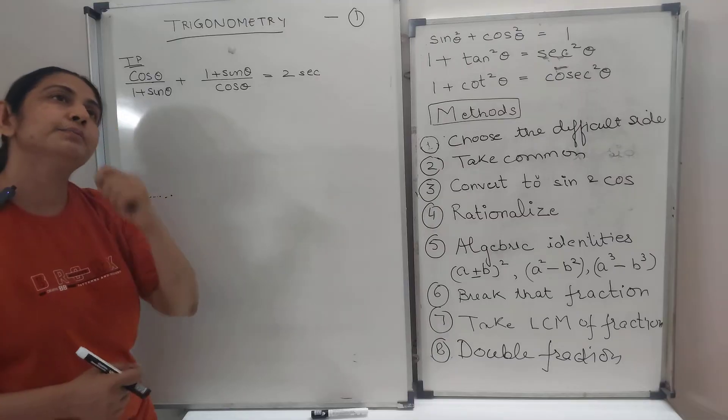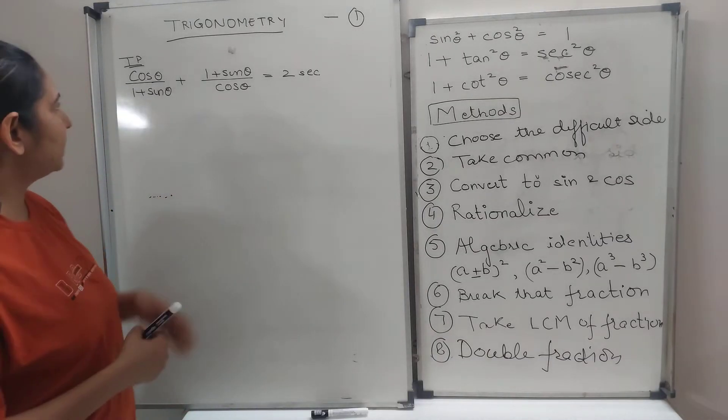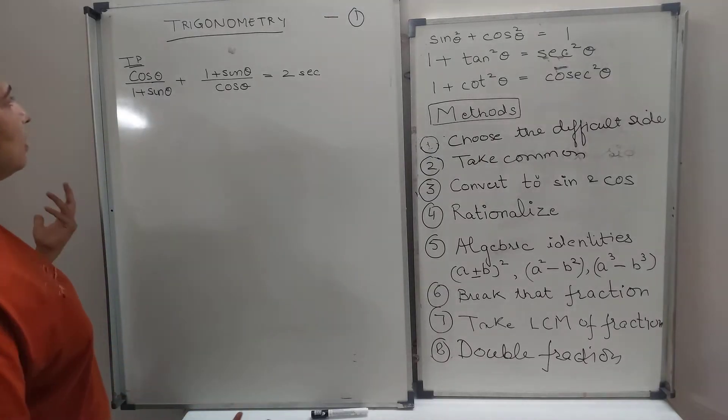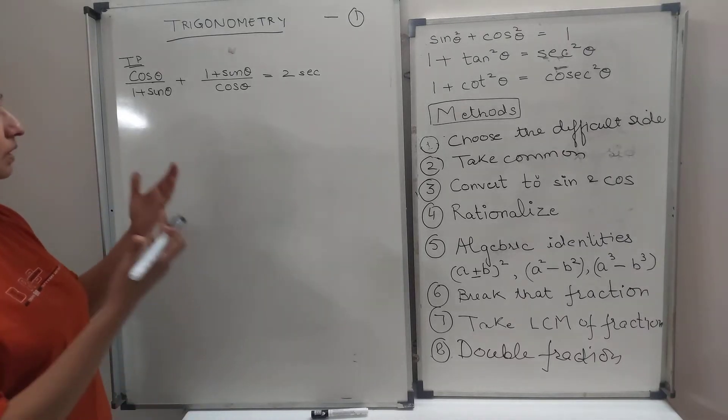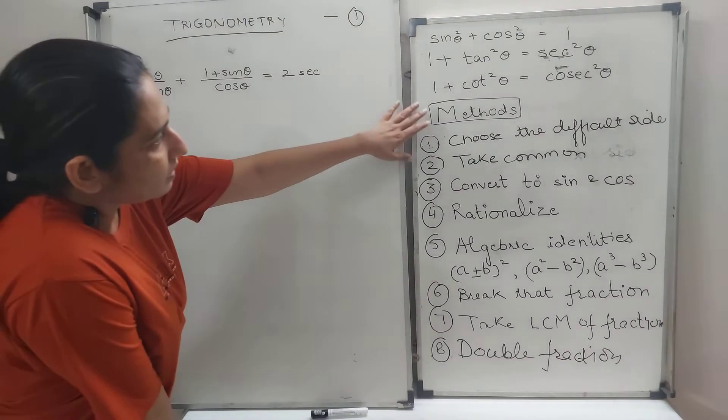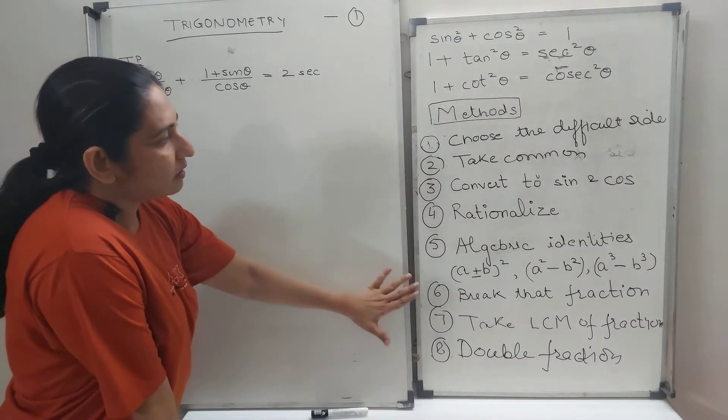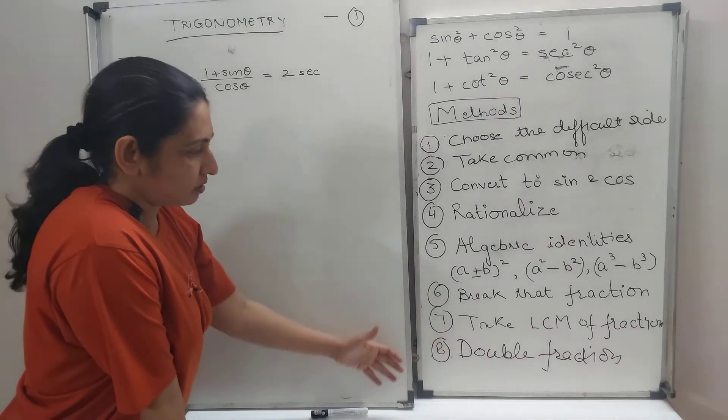So one problem which I've seen is that you write this question and then we don't know. There's so much written here. Where do I start it from? What do I do? This is our problem. So what I've done is I've written certain methods. Not only methods, these are steps, small small steps, which can be taken, which can be chosen.